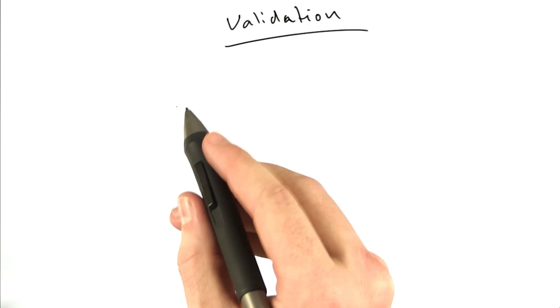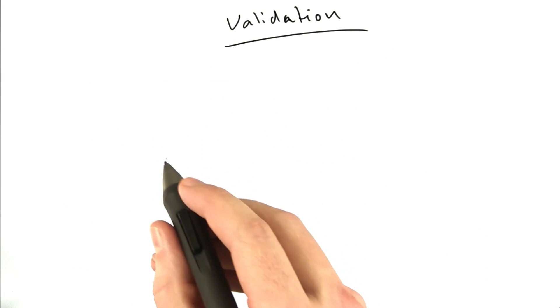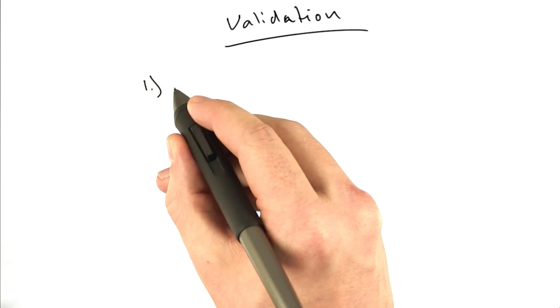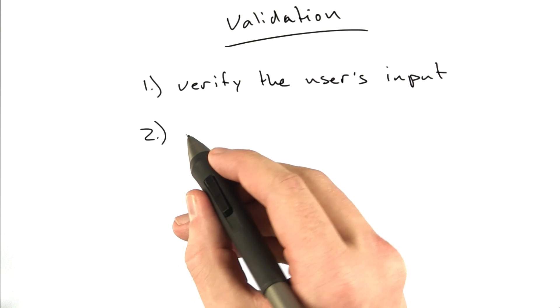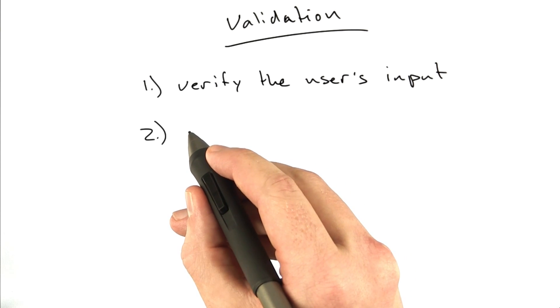Okay, so let's talk about our approach to doing this. We're going to have to do three things. First, we're going to have to verify the user's input. Next, we're going to have to detect if it's an error and render the form again maybe.